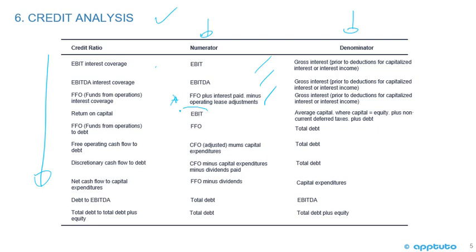Return on capital uses EBIT as the numerator and average capital — where capital equals equity plus non-current deferred taxes plus debt — as the denominator. Funds from operations to debt uses FFO as the numerator and total debt as the denominator. Free operating cash flow to debt uses CFO minus capital expenditures divided by total debt.